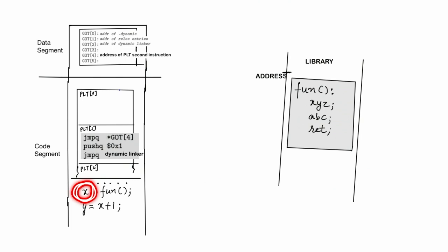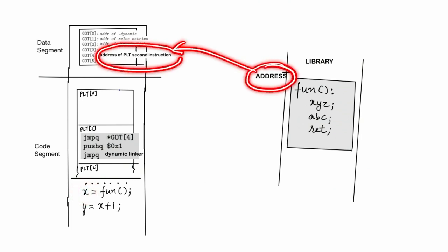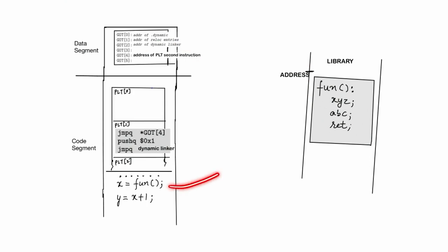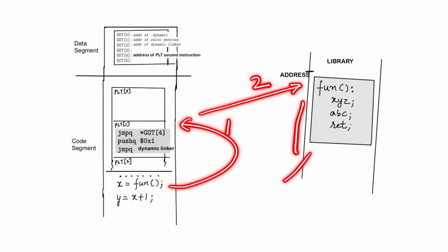Simultaneously, the dynamic linker updates the GOT entry for the same function, ensuring it points directly to the address of the function in loaded memory. This streamlined process allows for more efficient calls and smoother execution of the program in future. From this point forward, all successive calls effortlessly leap straight to the function within the library and return.